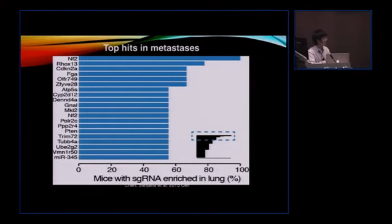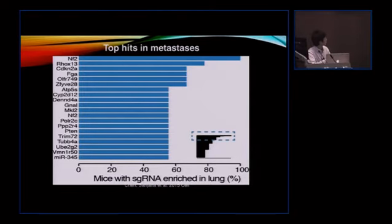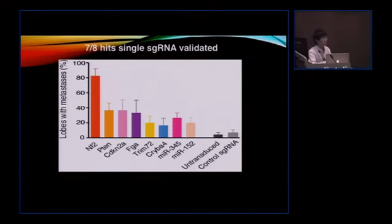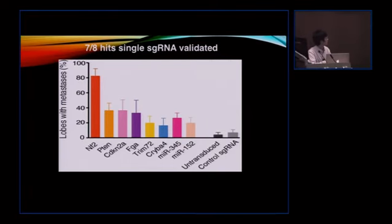We extracted all these clones and used statistics to rank them by frequency of occurrence across mice. At the top of the list, we see NF2 and PTEN — not surprising — along with many other novel genes still being characterized. To confirm our findings, we pulled the top genes out and designed four sgRNAs per gene — two independent sgRNAs and two sgRNAs from the library. We validated seven out of eight at a statistical level of p=0.05, suggesting that loss of function of these genes indeed promotes cancer metastasis.